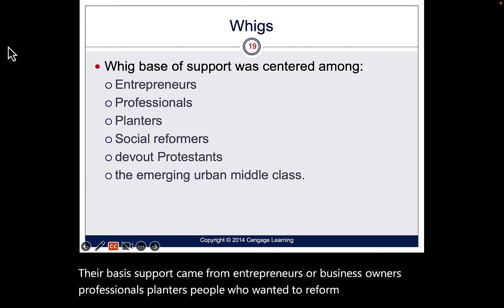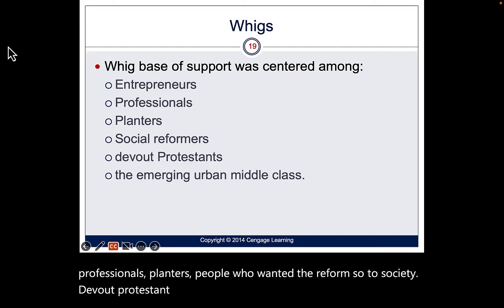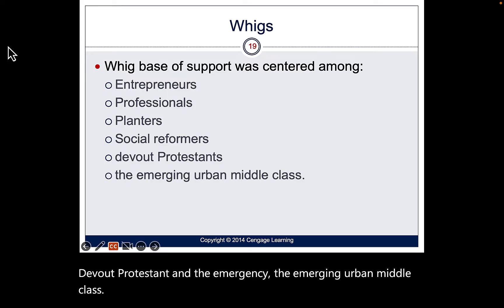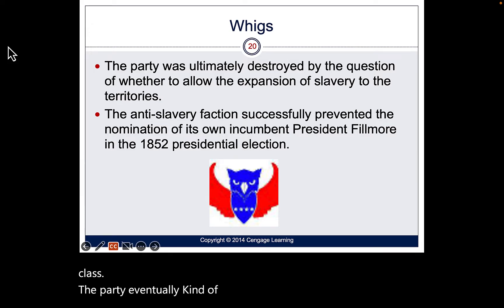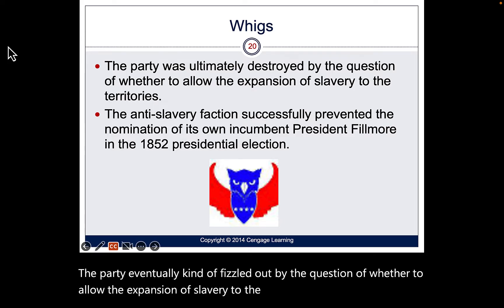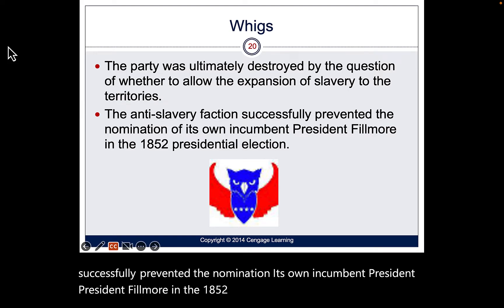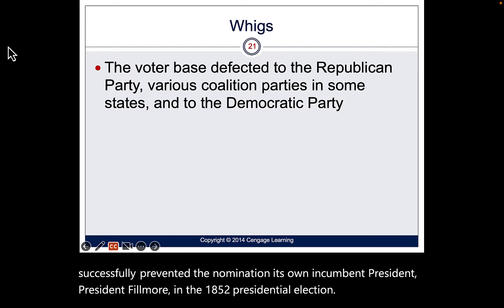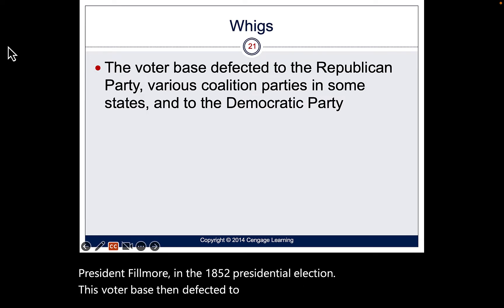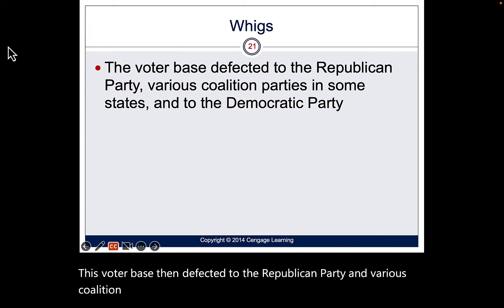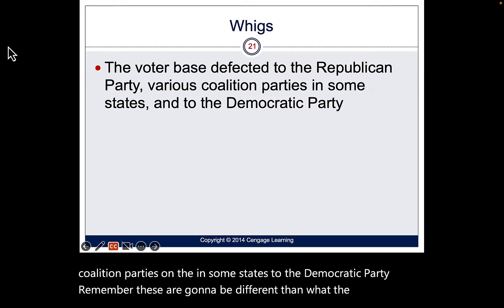The Whig Party eventually fizzled over the question of allowing the expansion of slavery into the territories. The anti-slavery faction blocked the renomination of incumbent President Fillmore in 1852. That voter base then defected to the Republican Party and various coalition parties, and in some states to the Democratic Party — though these parties were vastly different from what we know them as today.